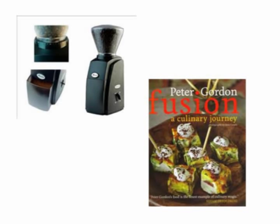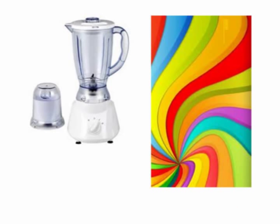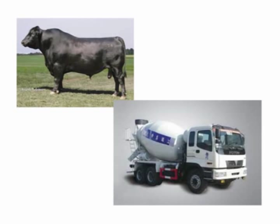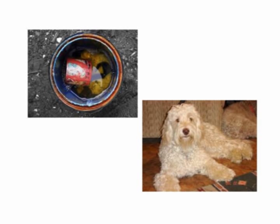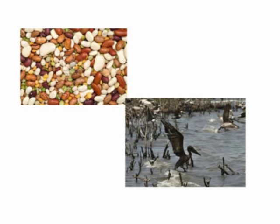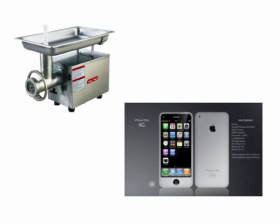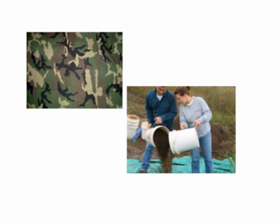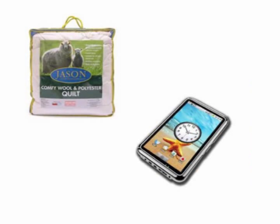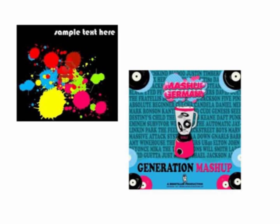We've got a coffee grinder, fusion cooking, a standard blender. We've got this image of a painting which is slightly psychedelic — it's a cross between an Andes of power and a ramen — a concrete mixer, a hybrid vehicle, and a sound mixer. We've got a mix of various paints that haven't really mixed completely, a labradoodle, a mixture of beans, and one of these oil leaks — really an environmental disaster. An industrial mincer at the top, and you would all recognise this iPhone. Here we've got four sorts of paint — blends of colours to create different tones. There's camouflage blends, people blending materials to make a potting mixture, white water rafting, blends of tea, wool-polyester blends, and mashups.